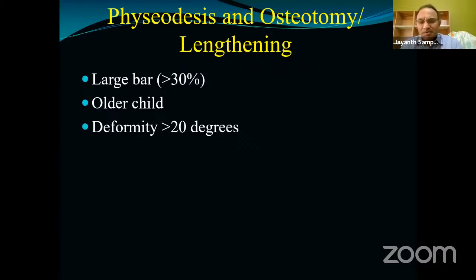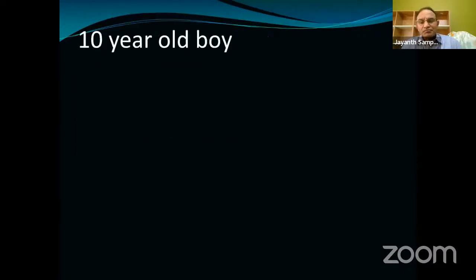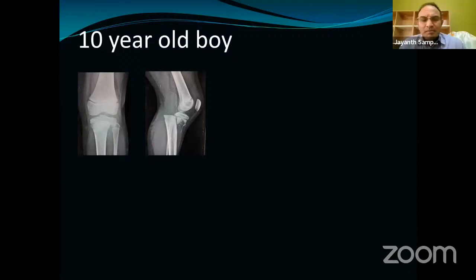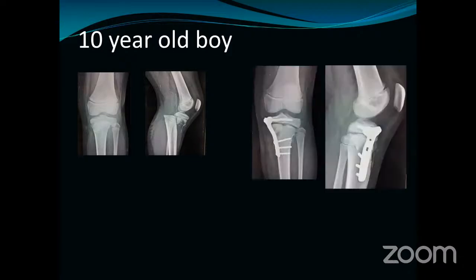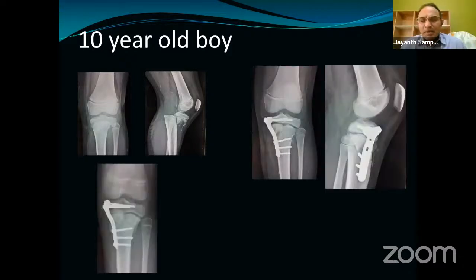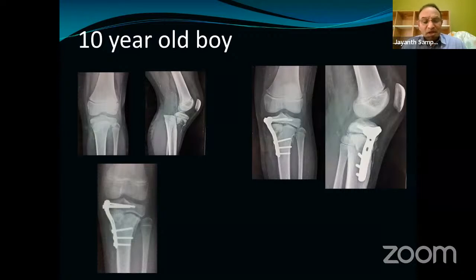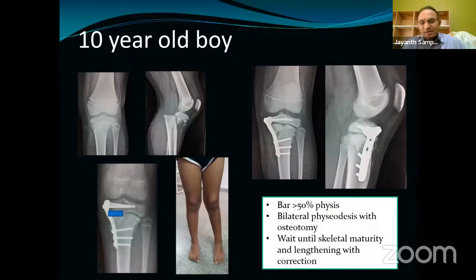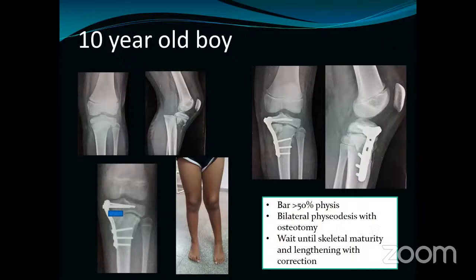If you have a large bar in an older child without enough growth remaining, with deformity more than 20 degrees, and all the problems associated with partial bars - then we just put cold steel across the growth plate. This is a 10-year-old boy whose physial injury was managed outside and the bar is occupying almost 50% of the physis. There is no point in resecting these bars. Just close down the entire growth plate, allow them to develop a length discrepancy, and then at skeletal maturity do a lengthening associated with deformity correction.